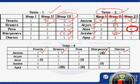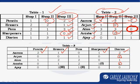Since Anisha and Arjun bought one diary each, as we can see from the table, they must have bought it from either Shop 1 or Shop 3. This implies Amna and Alish bought two diaries and one diary respectively from Shop 2.